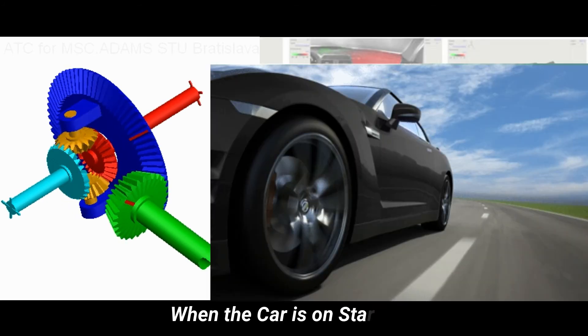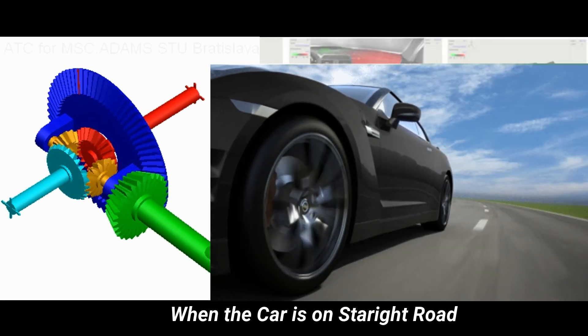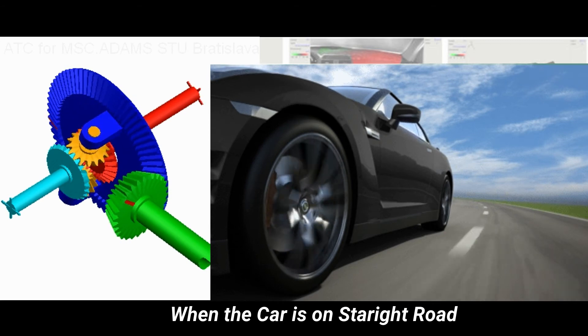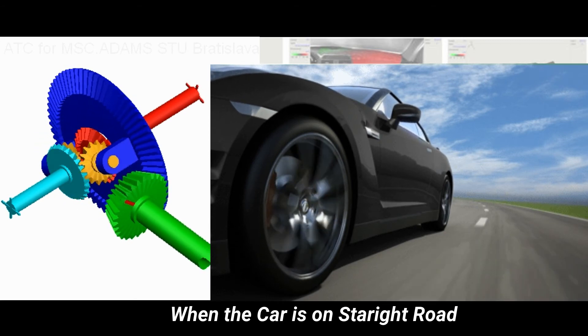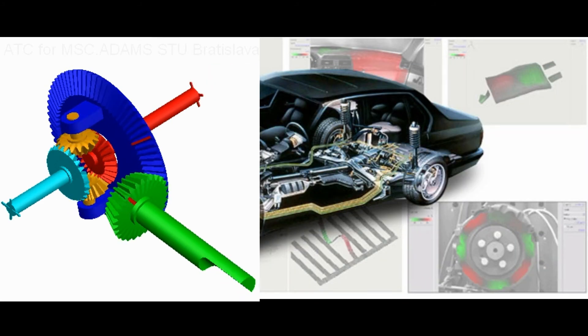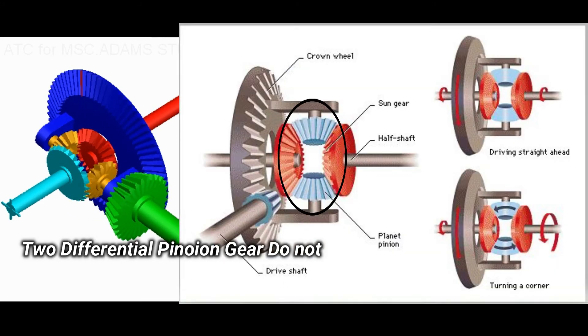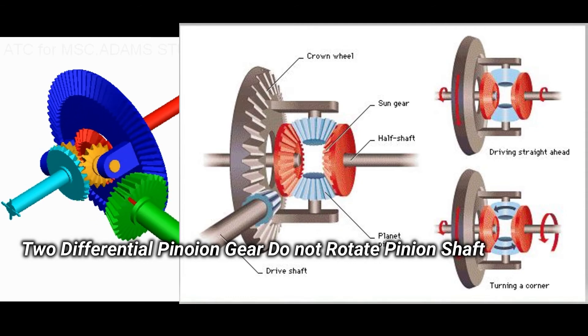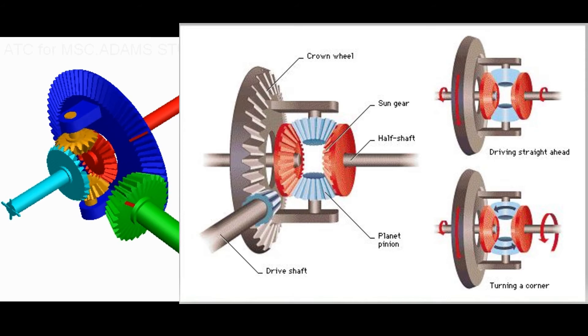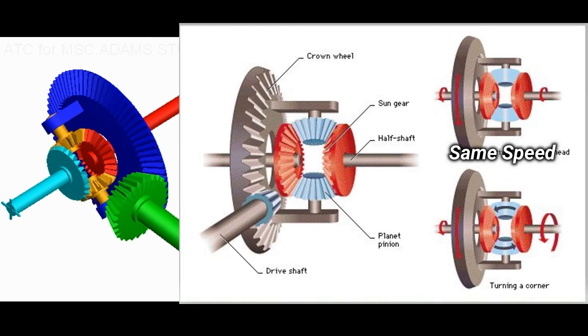When the car is on a straight road, the ring gear, differential case, differential pinion gears, and two differential side gears all turn as a unit. The two differential pinion gears do not rotate on the pinion shaft. This is because they exert equal force on the two differential side gears. As a result, the side gears turn at the same speed as the ring gear, which causes both drive wheels to turn at the same speed also.